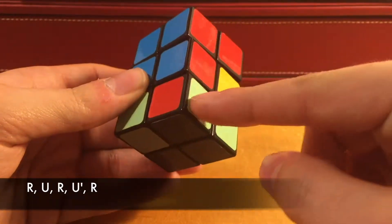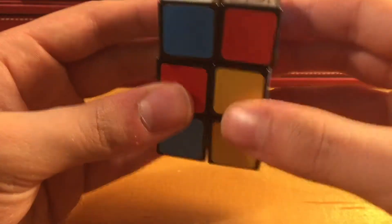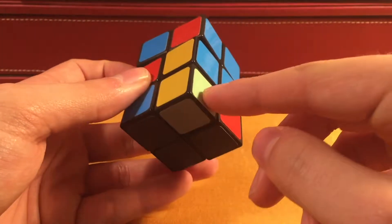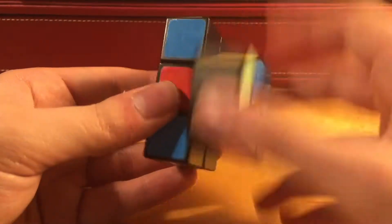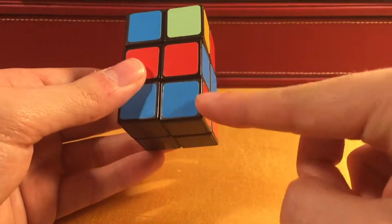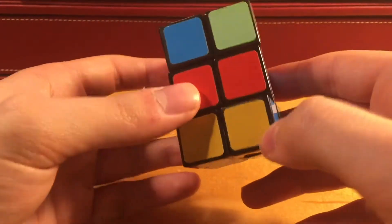And you just do the same thing to the last one, which in this case is right here. I don't even have to rotate it above its proper position, and I do R U R U' R, and that drops that corner from directly above into its respective position.